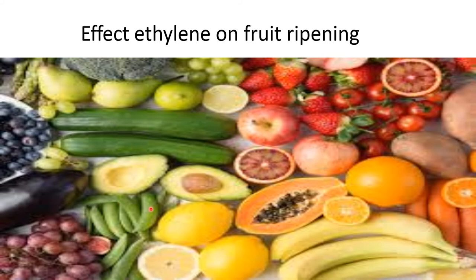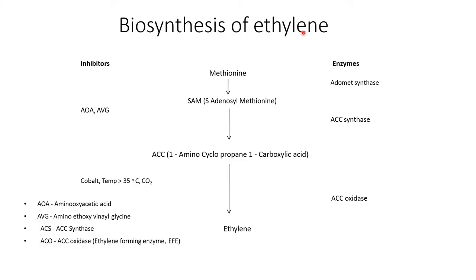The most accepted pathway for synthesis of ethylene is the methionine pathway. Biosynthesis of ethylene starts from methionine, which is converted into S-adenosylmethionine with the enzyme AdoMet synthase. S-adenosylmethionine is converted into ACC (1-aminocyclopropane-1-carboxylic acid) with the enzyme ACC synthase. ACC is then converted into ethylene with the enzyme ACC oxidase at temperatures below 35°C and in the presence of carbon dioxide.